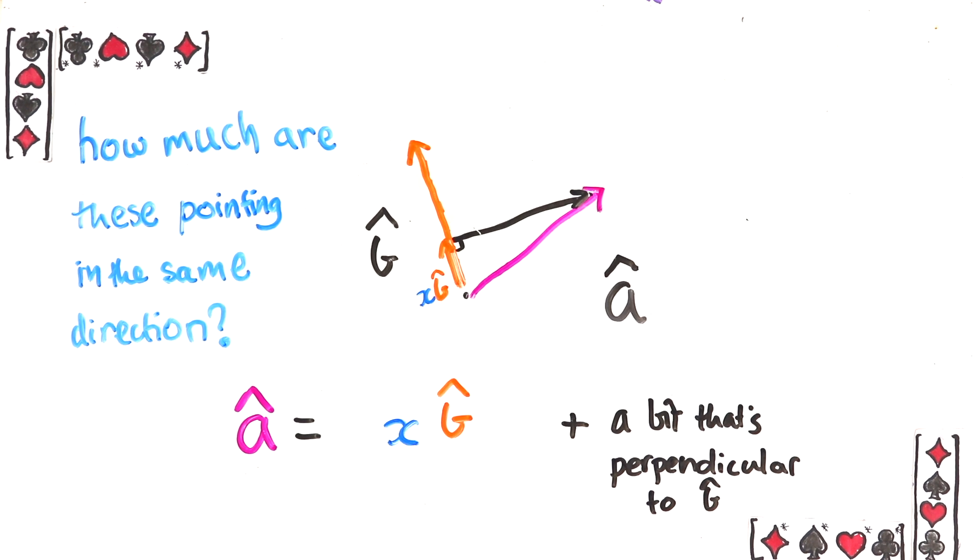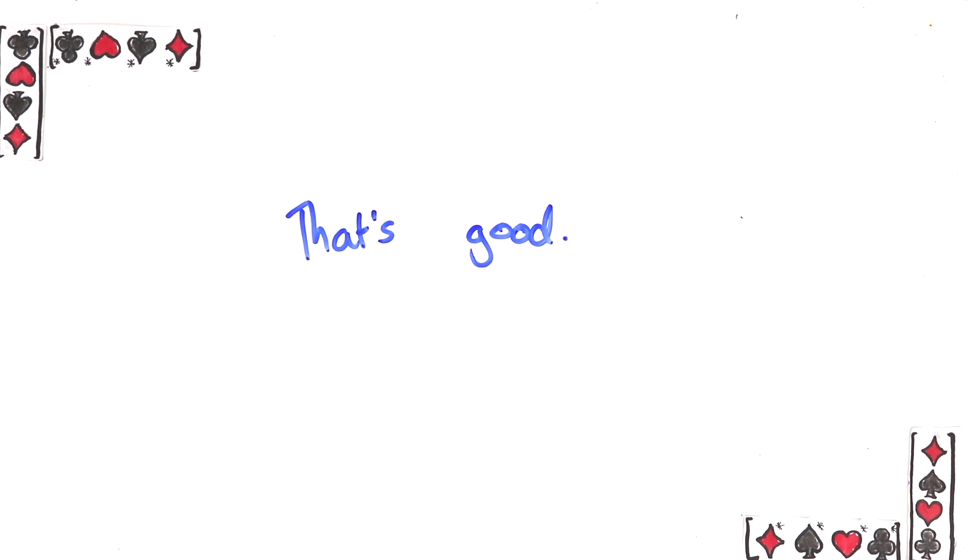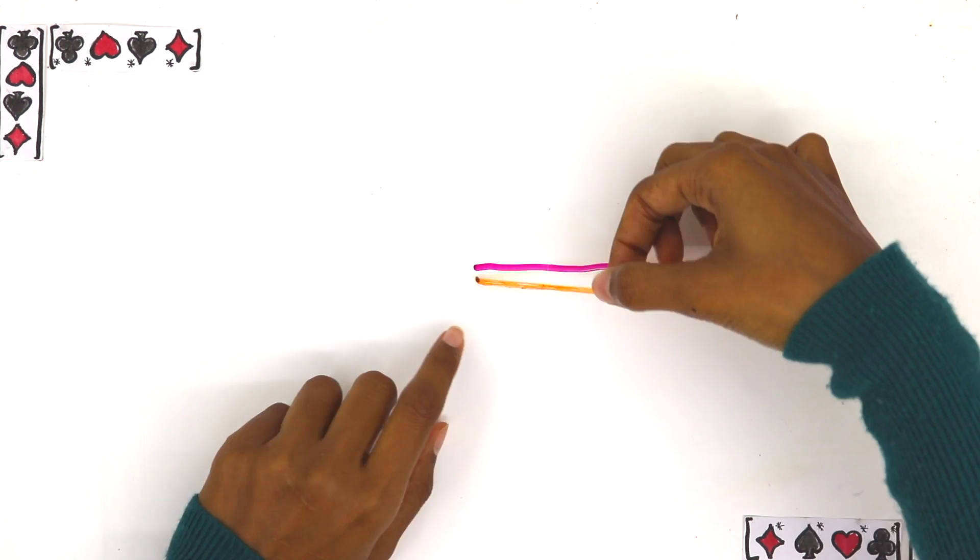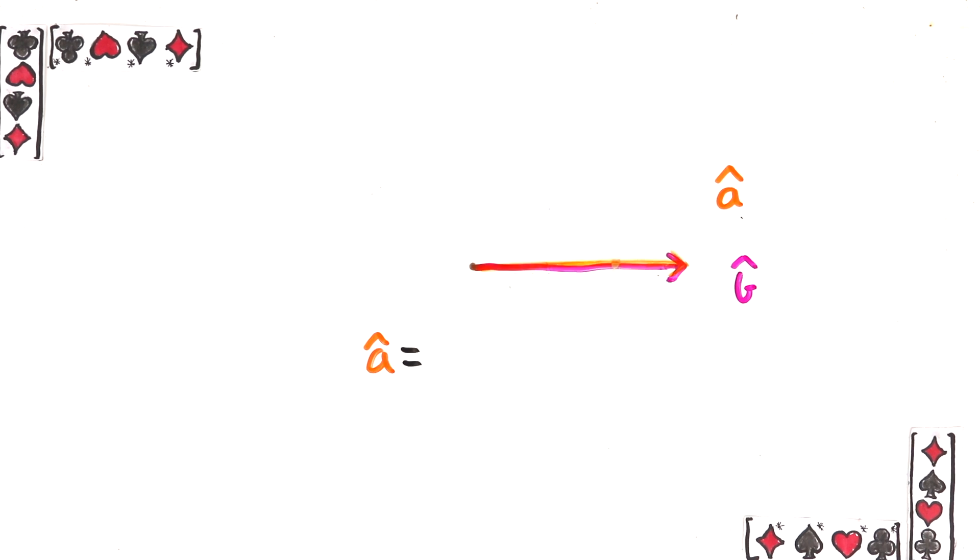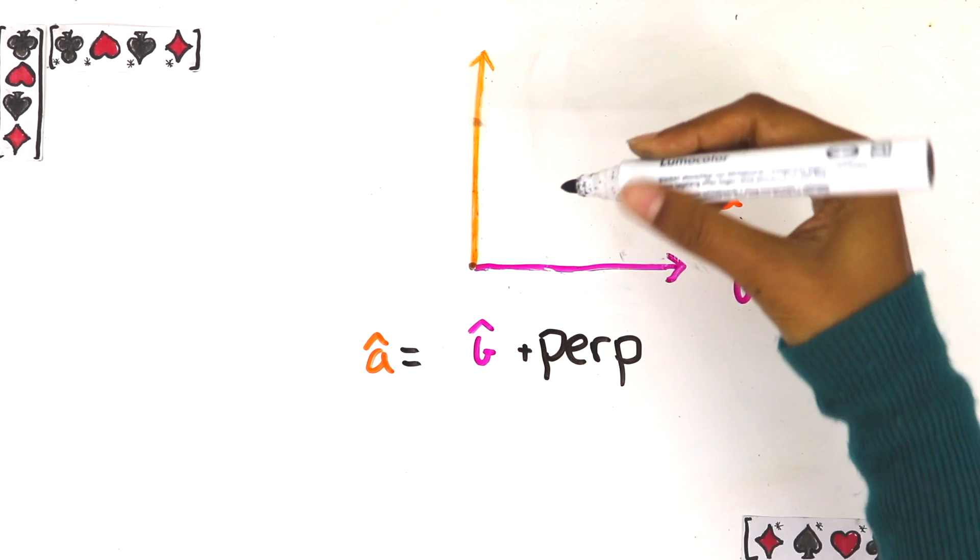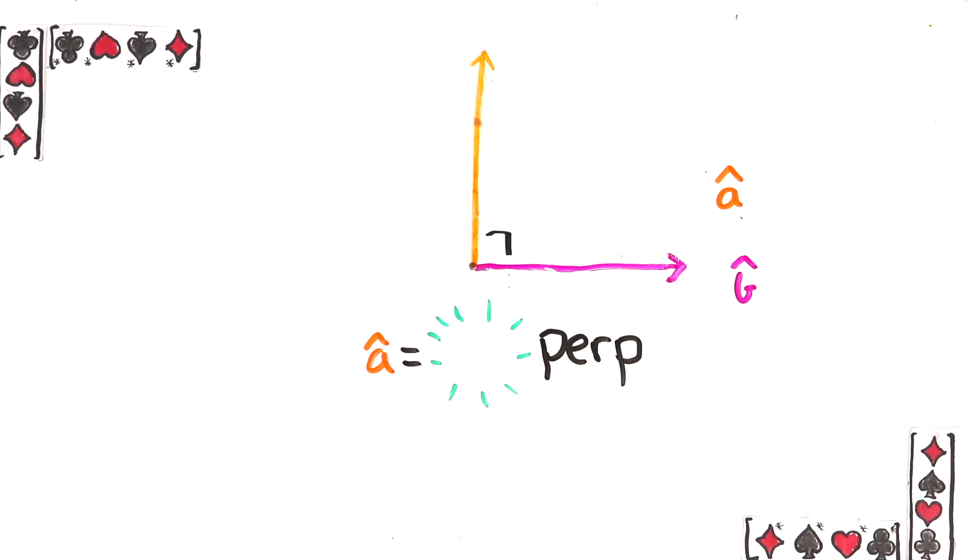Still that may not convince you so let's do some examples to help see it. Imagine they're pointing exactly the same way. Then a hat equals 1 times b hat so x is equal to 1. But then as it rotates away x gets smaller. This makes sense because they're less in the same direction. Then they're totally perpendicular and the number is 0. Again that makes sense.